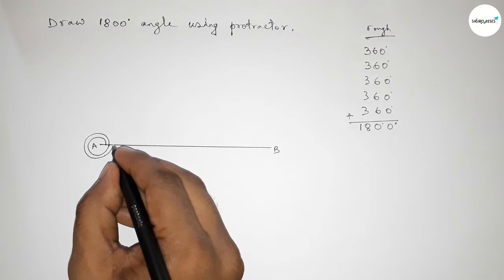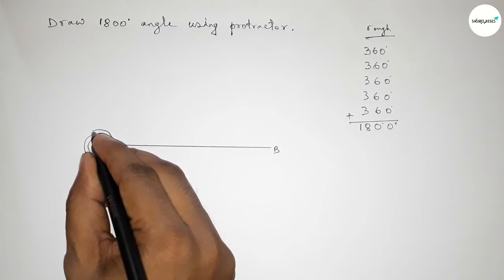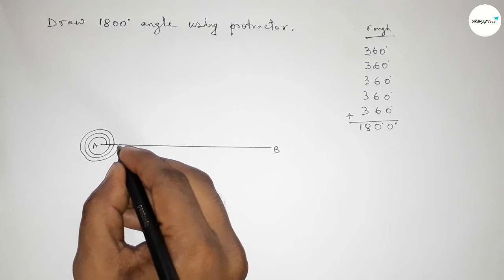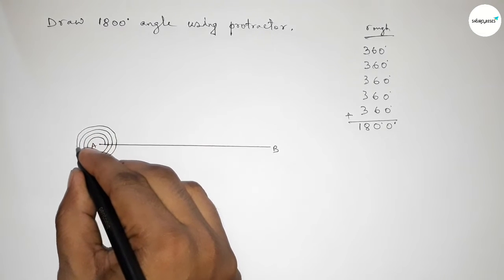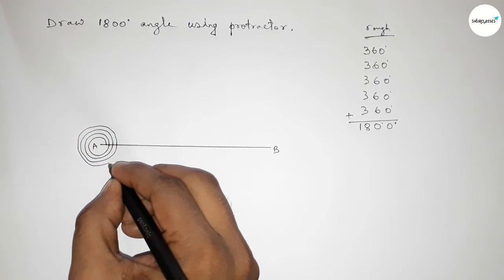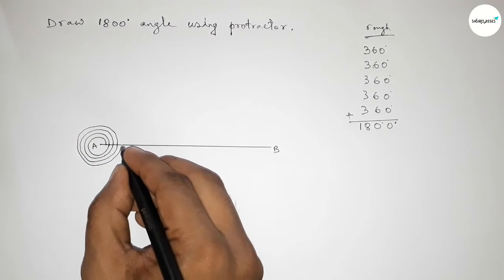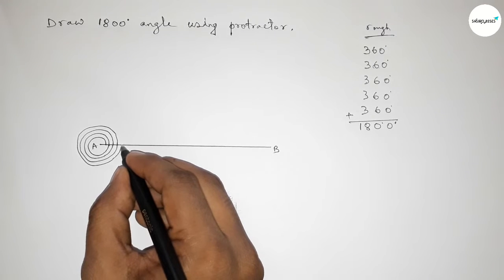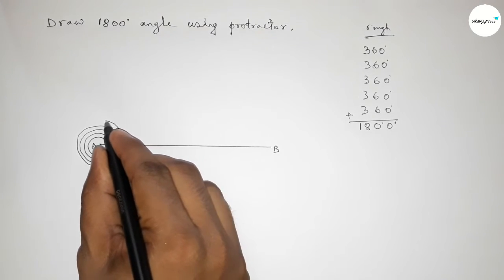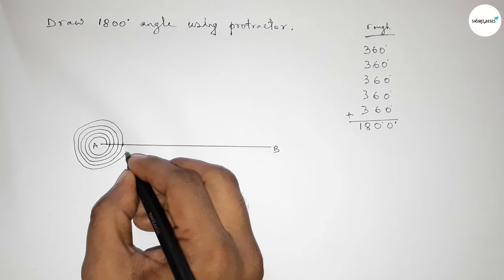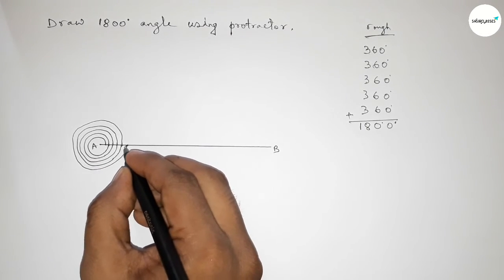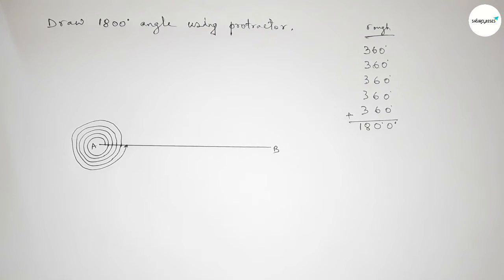Then taking third round, so third 360 degree. Then adding fourth round, so four 360 degree angle. And taking fifth round, so this is fifth 360 degree angle. Okay, so this is total